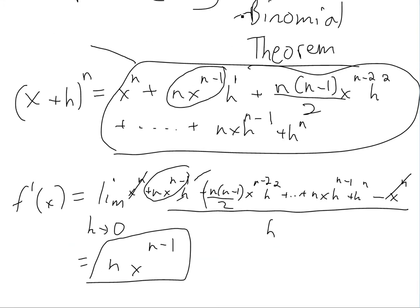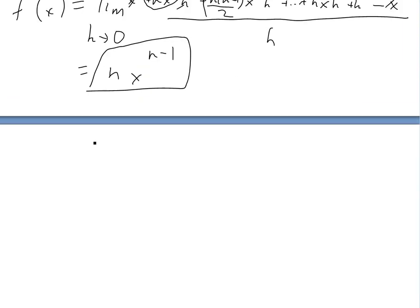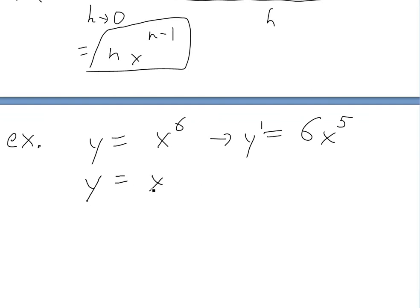So, that's basically it. So, if we want to do now for an example, we'll go with, let's say, y equals x to the 6. The derivative is going to be y' is equal to 6 times x to the 5. If y is equal to x to the 1,000, then the derivative is just equal to, basically, 1,000 times x to the 999. So, that's all it is.